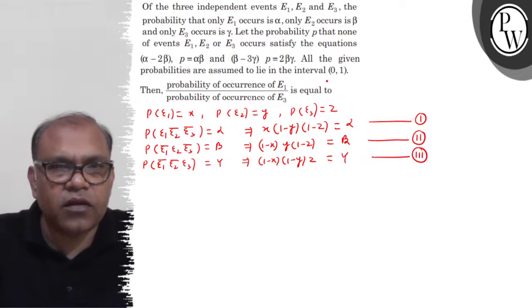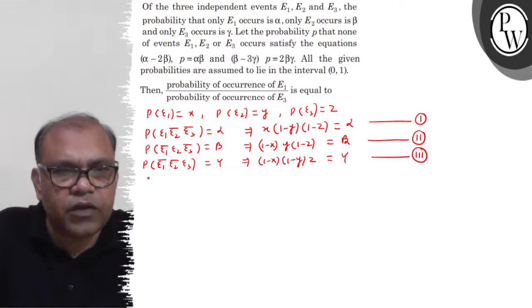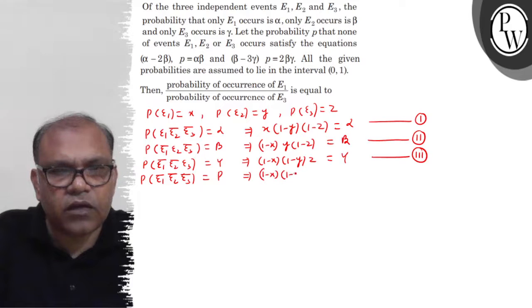Ugly information is that probability that none of E1, E2 or E3 occurs is P. It means probability E1 not, E2 not, E3 not equals P. This implies (1 minus X) into (1 minus Y) into (1 minus Z) equals P.